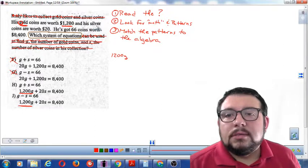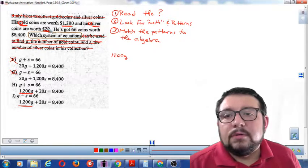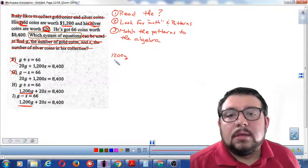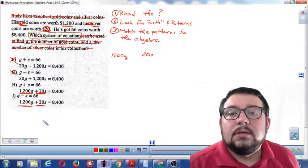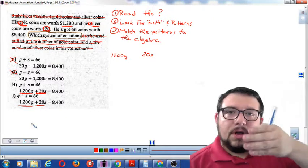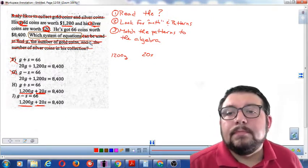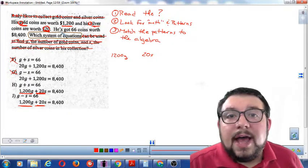Okay, silver coins are worth $20. So let's see, silver $20. So we know that silver is $20. So we should also see somewhere in our answer choice that $20 and S go together. Look, this one has it and this one has it. Okay, so let's see. So that means 20, 20, 20, 20, 20 for each silver coin. That's a pattern.